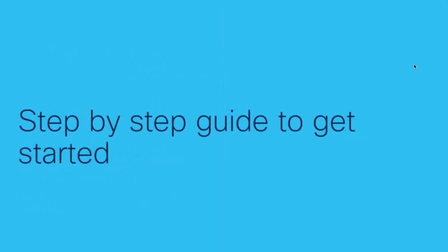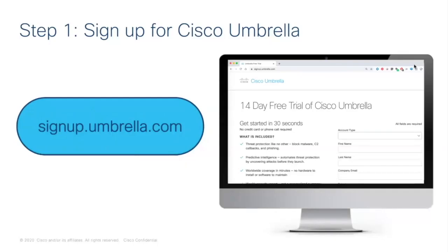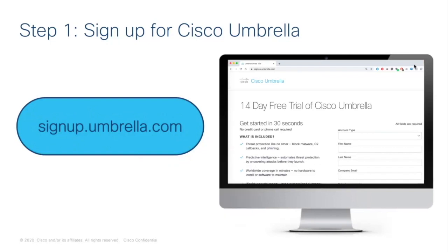So let's talk about how you can actually get started. The first step is to sign up for access to Umbrella. If you go to signup.umbrella.com, you'll fill out some fields and receive an email with instructions on how to activate and get started. No credit card is needed — just follow the steps. The standard trial length is 14 days, but we can help you extend beyond that trial period too.